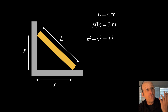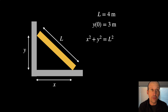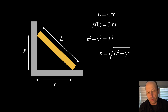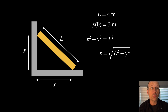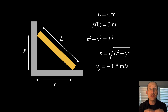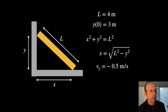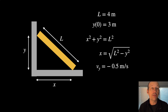I want to find the velocity for X, so I'll solve this equation for X. Subtract Y squared from both sides and take the square root: X equals the square root of L squared minus Y squared. I also know that the Y velocity, VY, which is dy/dt, is negative 0.5 — it's moving down, and that negative sign is important.